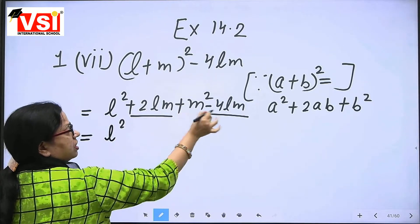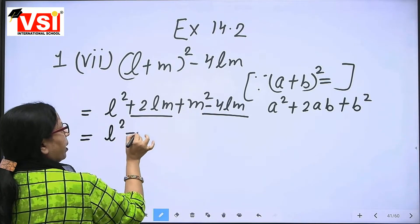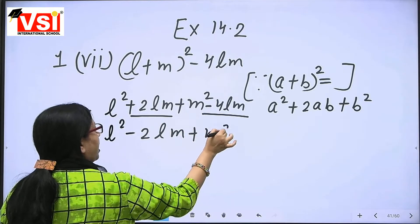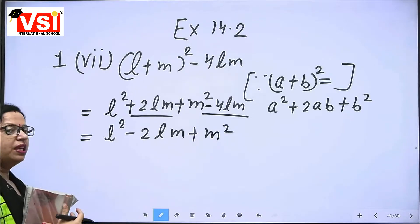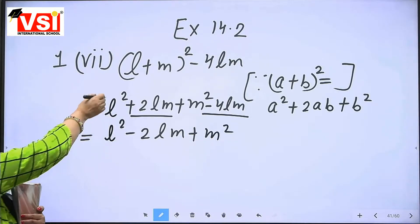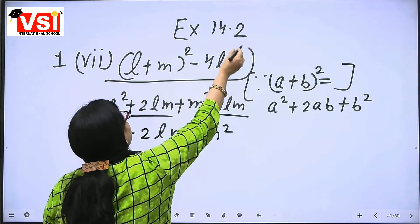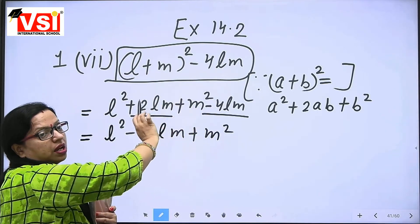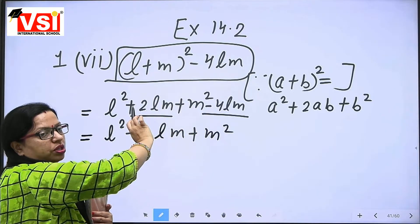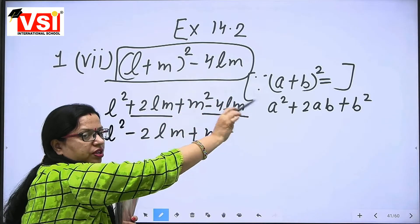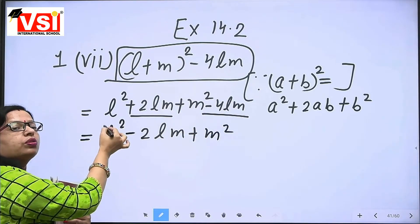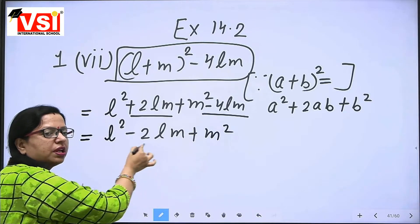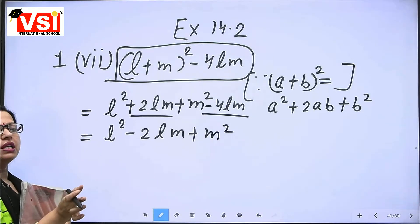Now look here — plus 2LM and minus 4LM. Both variables are the same with the same power, so we can do subtraction between them. After subtraction we get minus 2LM plus M square. That is the format we get after opening the whole square according to the first identity.